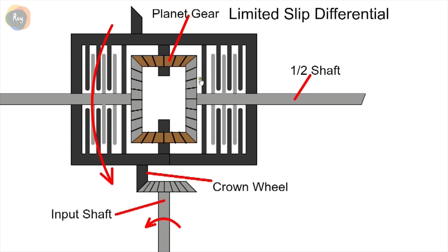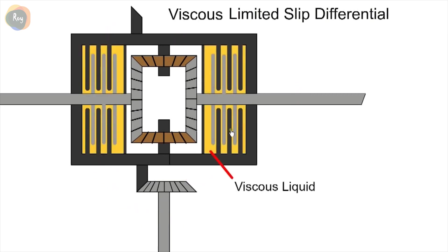The cage has a set of plates fixed to it and the half shaft has another set of plates. The sealed chamber around the plates is filled with a thick viscous liquid. When the car travels in a straight line, both sets of plates rotate together.